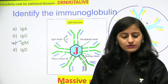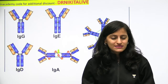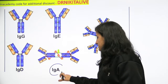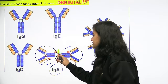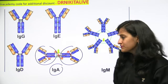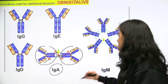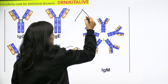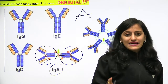Now, which immunoglobulin is a dimer? IgA is a dimer — this was also an image asked in the exam. When you see two immunoglobulins joined together, that is a dimer. Remember IgA is a dimer — the letter A itself has two lines. It is joined by the joining chain.